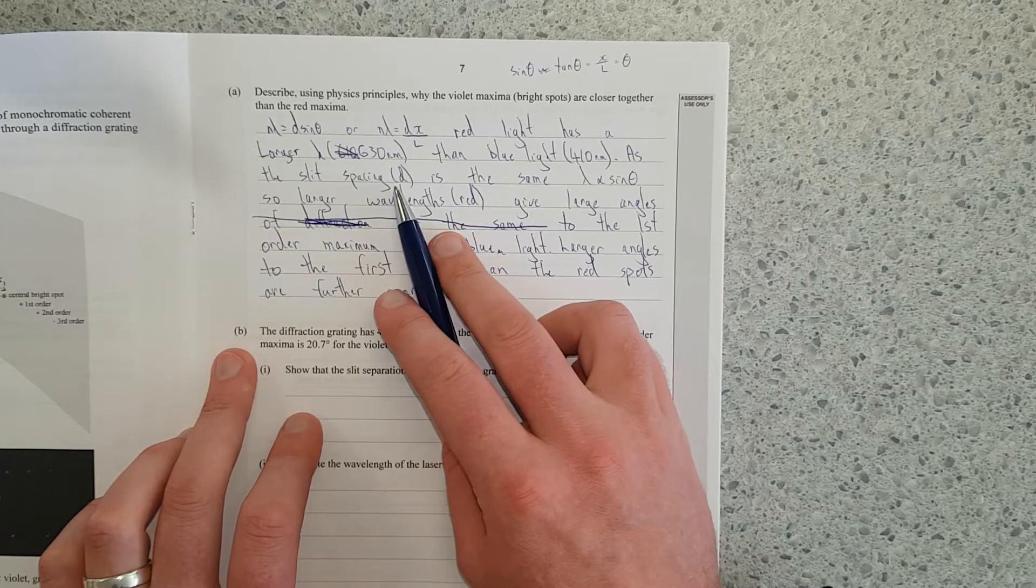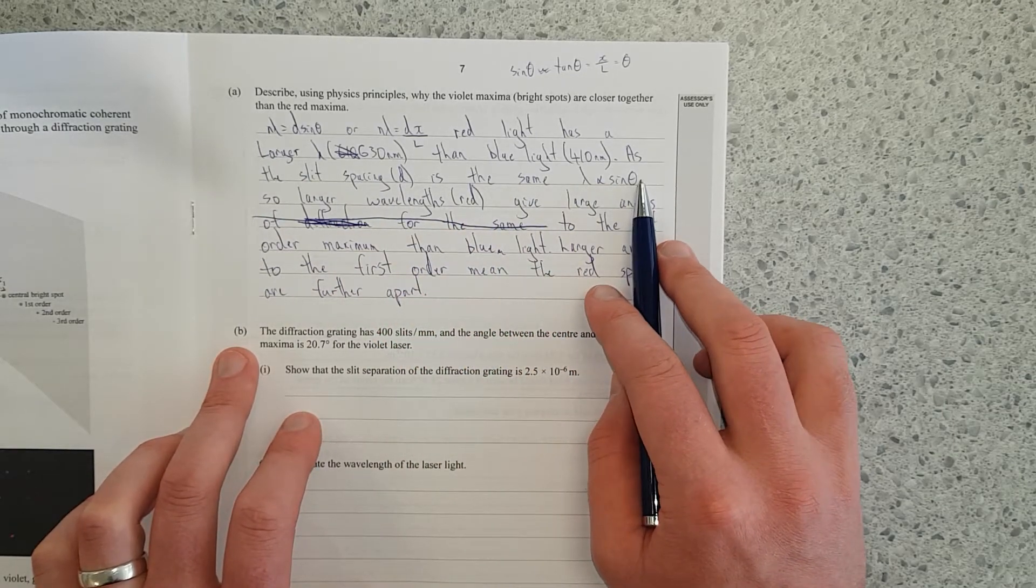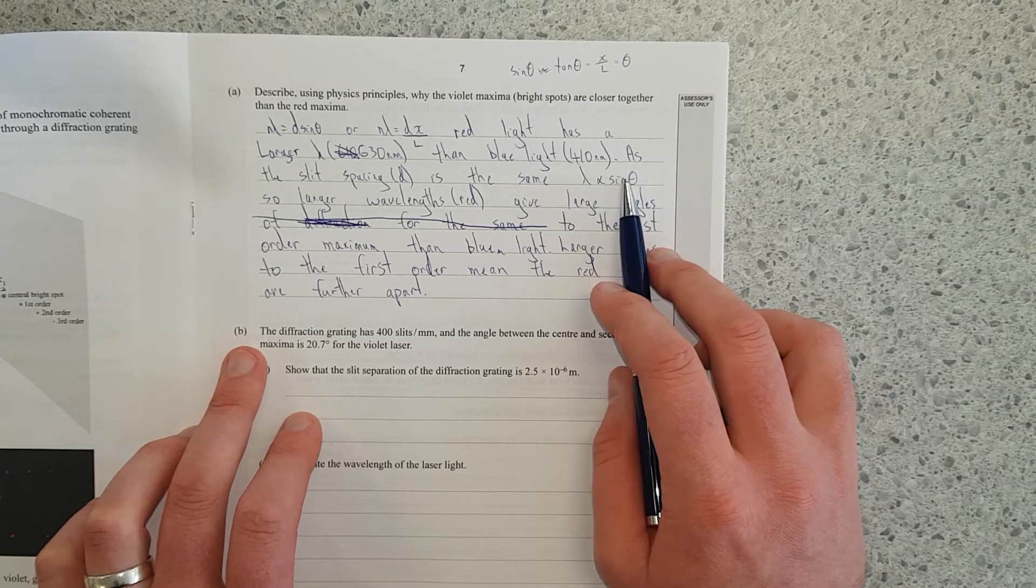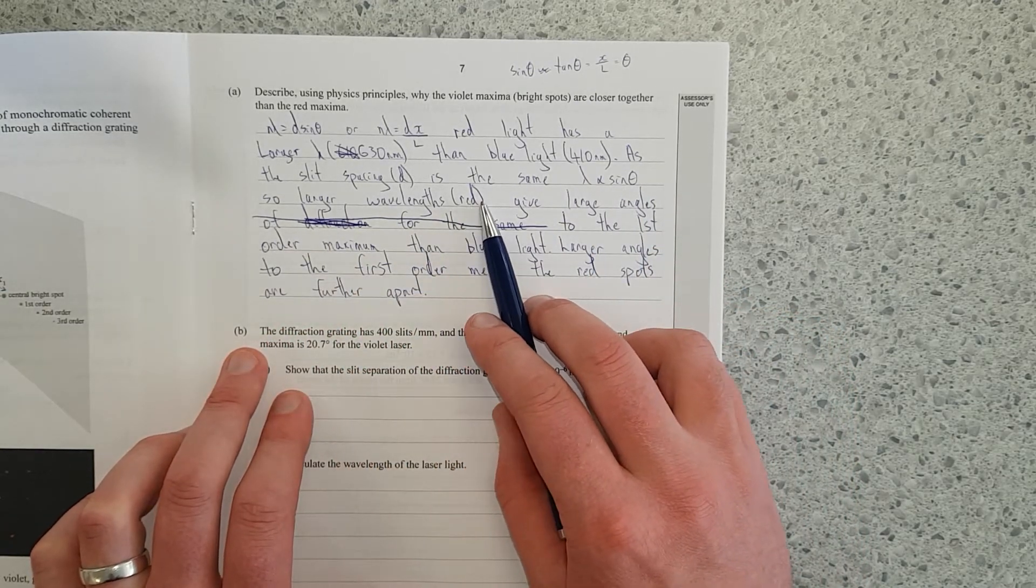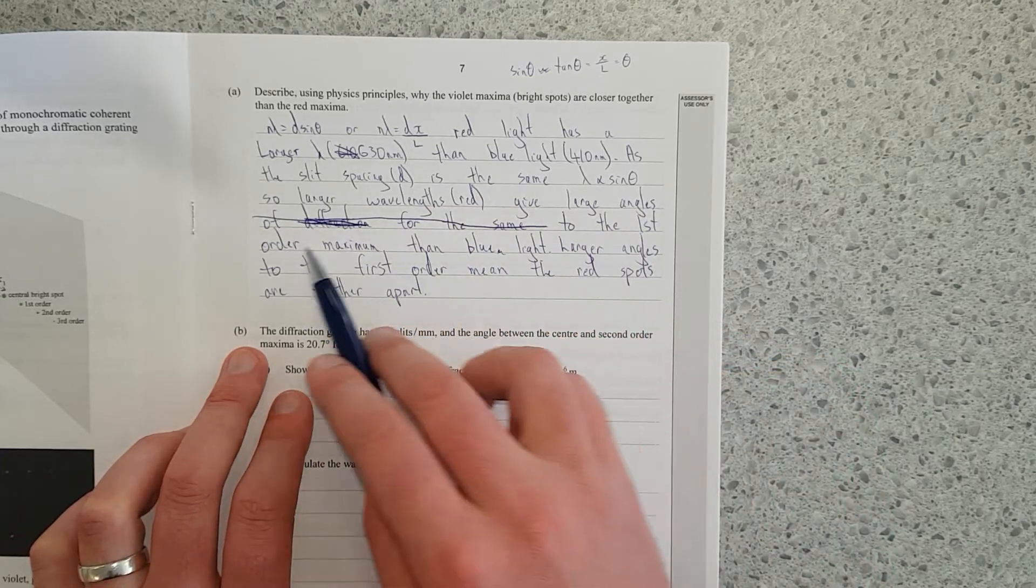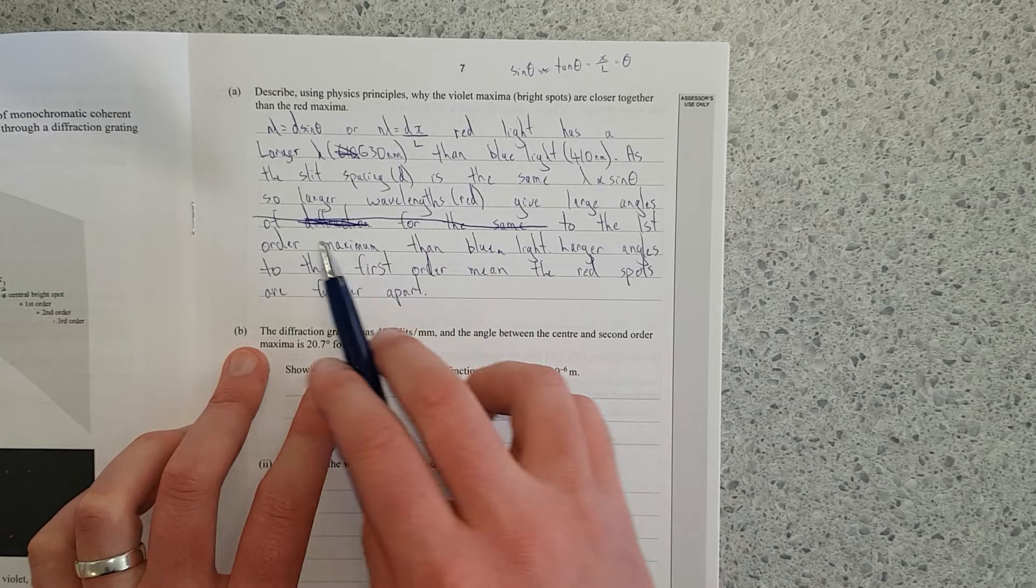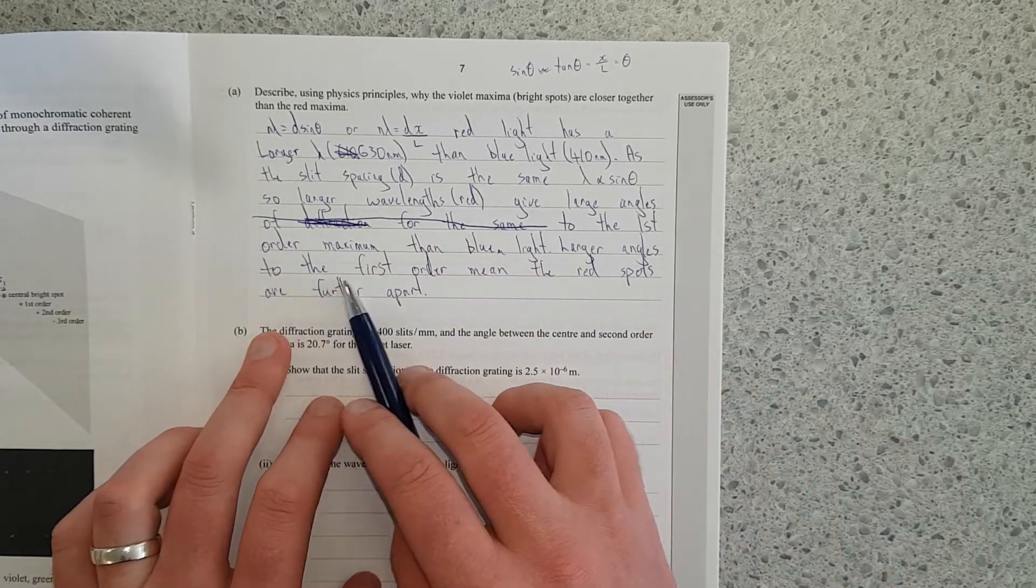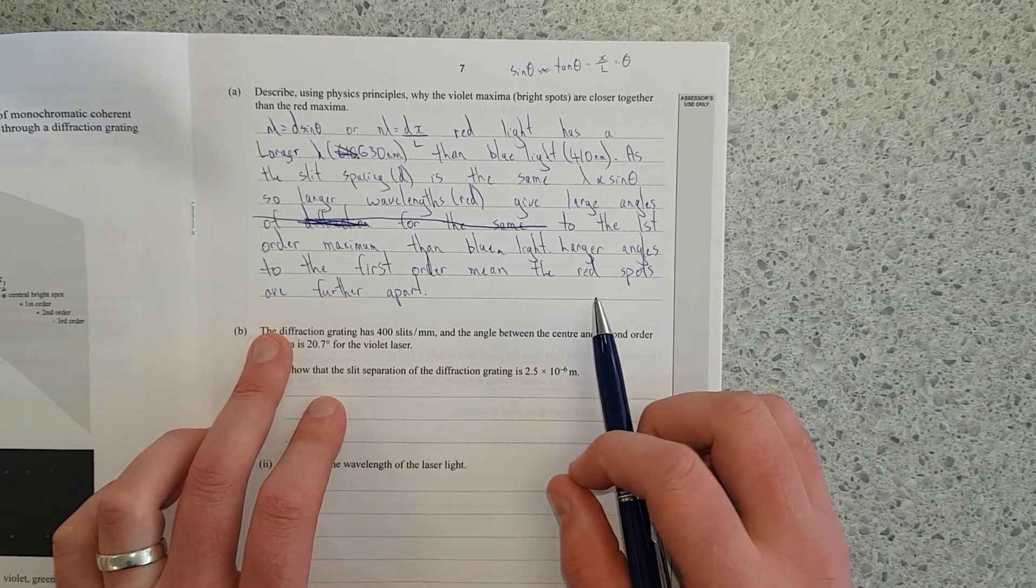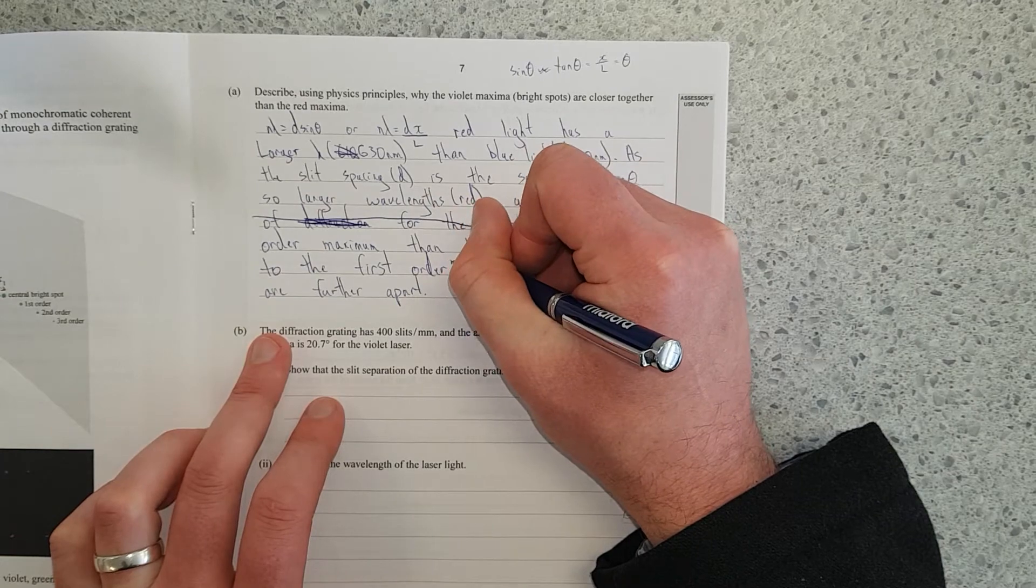Right, so I've said red light has a larger wavelength. Red light is 630 nanometers and blue light is about 410 nanometers, roughly. As the slit spacing d is the same, lambda is proportional to sine of the angle. It's not proportional to the angle, it's proportional to the sine of the angle. So larger wavelengths, red, give larger angles to the first order maximum than blue.